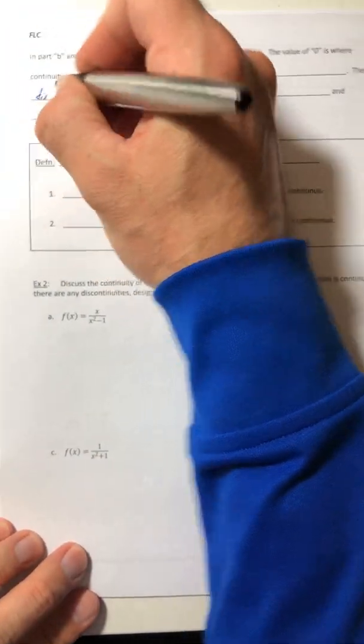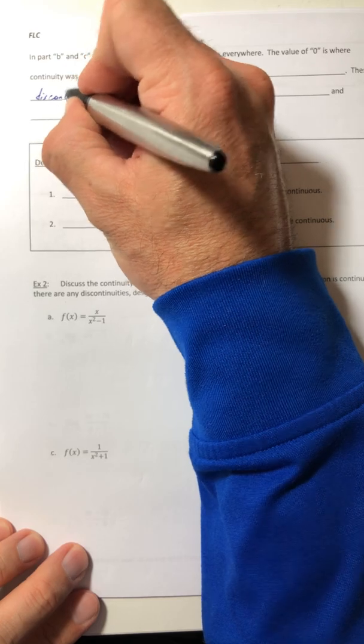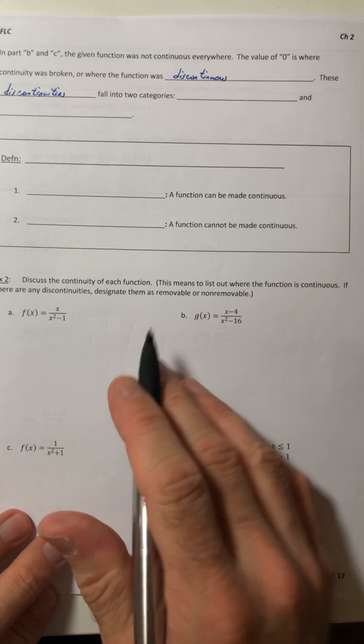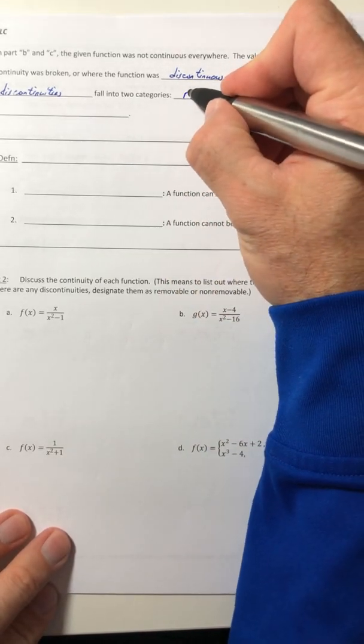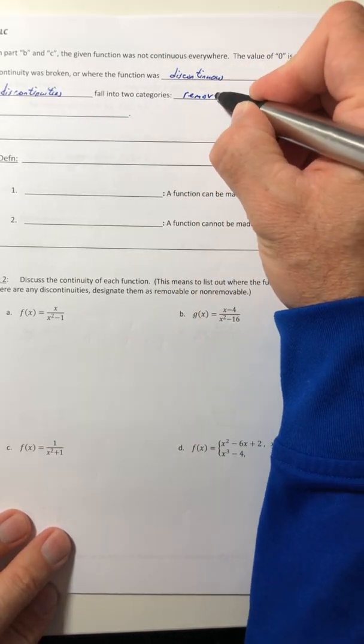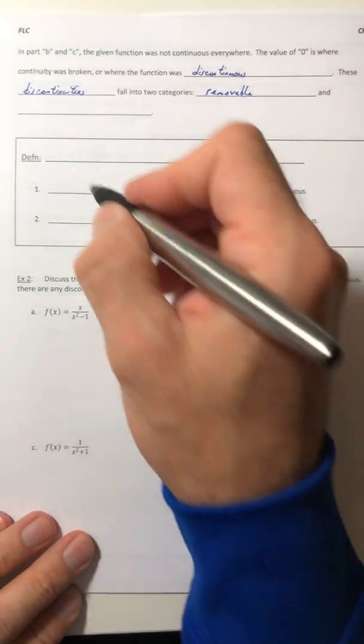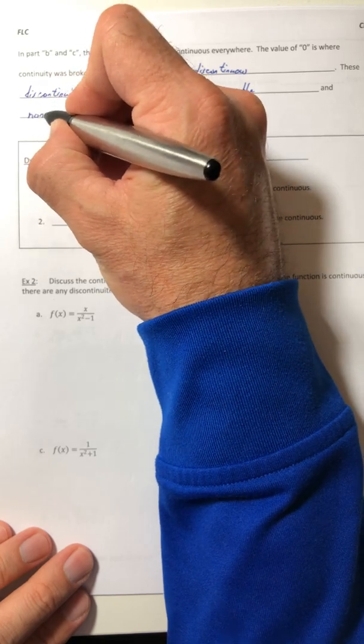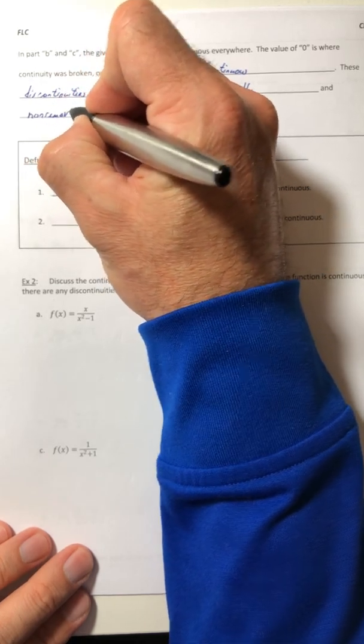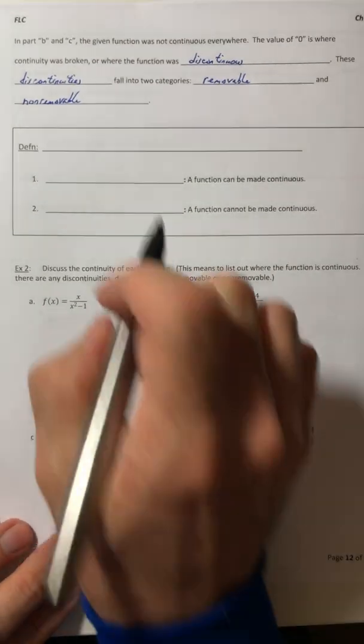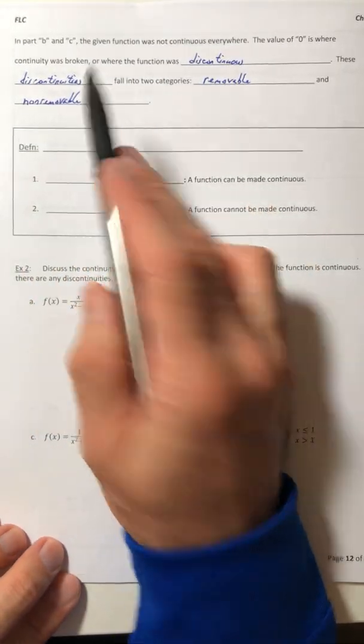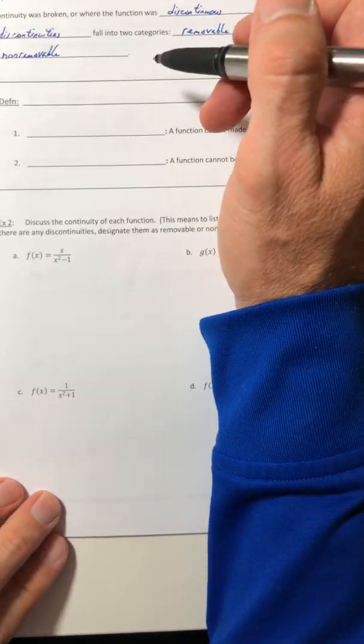So that value of zero from those cases is where continuity was broken or where the function was discontinuous. These discontinuities fall into two categories. They can either be removable or non-removable. Let's see how to tell them apart.